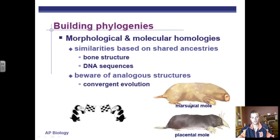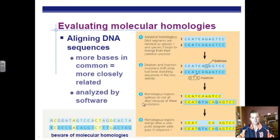You can see here the marsupial mole and the placental mole — they evolved separately from one another, so these are examples of analogous structures rather than homologous structures.